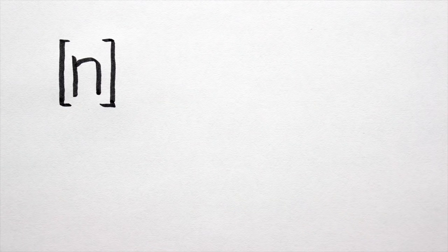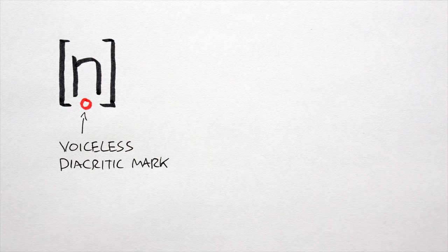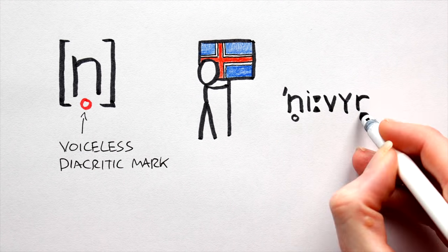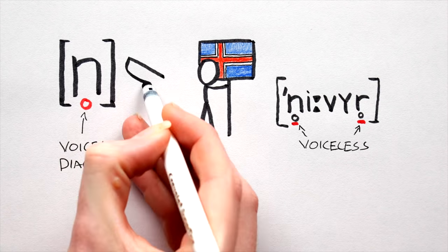Within reason, we can unvoice any sound in the IPA by adding this diacritic mark. Icelandic features unvoiced nasal stops, as in Hnivr, the Icelandic word for knife.